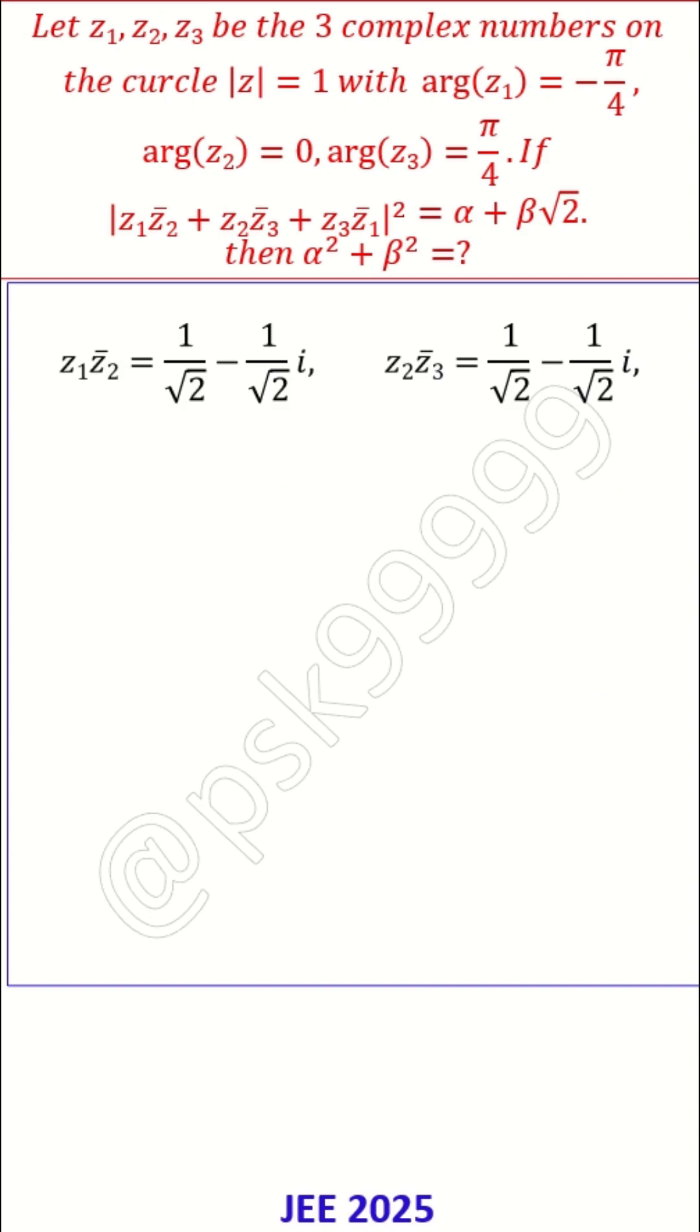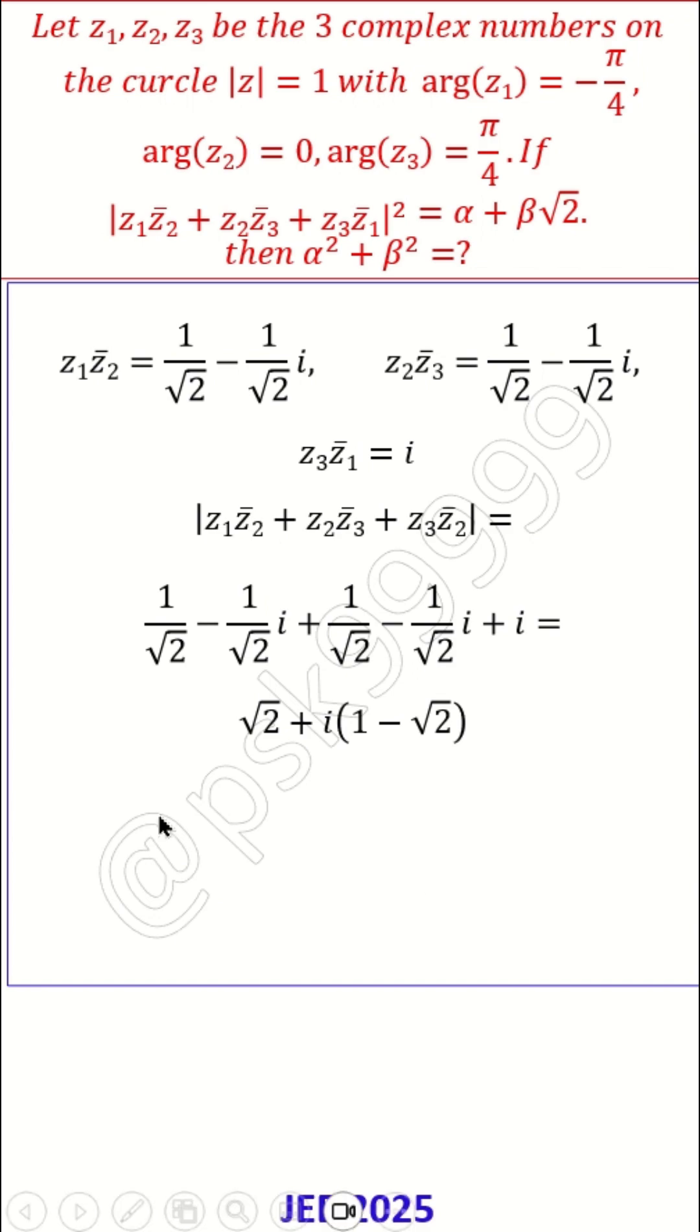Now once you know this one, given expression: z1 z2 bar is this value, z2 z3 bar is this value, z3 z1 bar is i. Now modulus of this one is nothing but square root of 2 plus i times 1 minus square root of 2. Now what you require here is this modulus square. So square of modulus is equal to 5 minus 2 root 2.